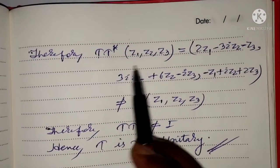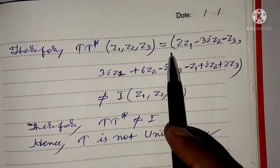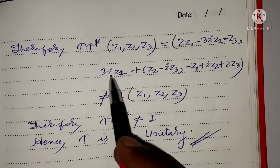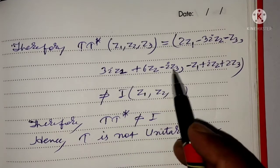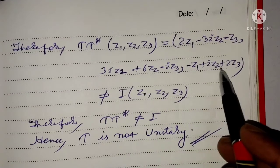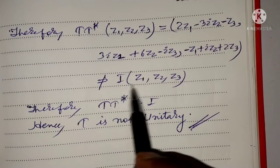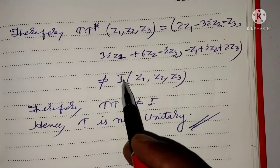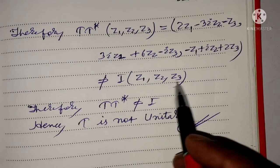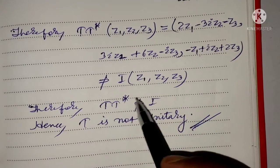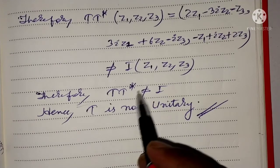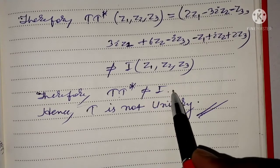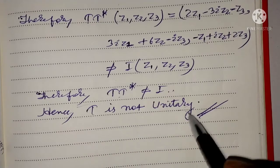Therefore T·t* of (Z1, Z2, Z3) equals (2Z1 - 3iZ2 - Z3, 3iZ1 + 6Z2 - iZ3, -Z1 + iZ2 + 2Z3), which is not equal to the identity applied to (Z1, Z2, Z3). Therefore T·t* is not equal to I, so T is not unitary.